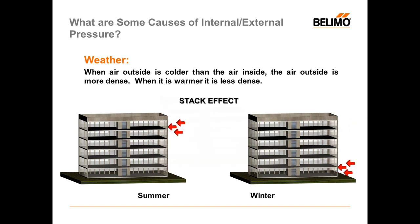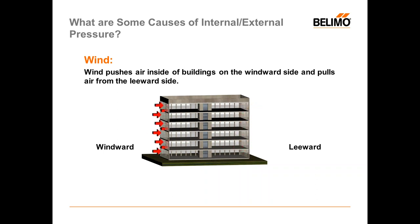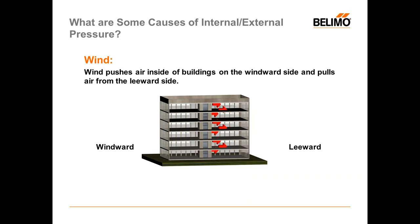Wind is another factor. Wind on the windward side of a building increases the pressure; on the leeward side, it decreases the pressure. In the summer, wind drives moisture-laden air into the windward side of the building. In the winter, air exiting the building pulls out the comfort and heating internal to the building.